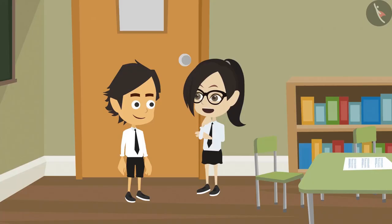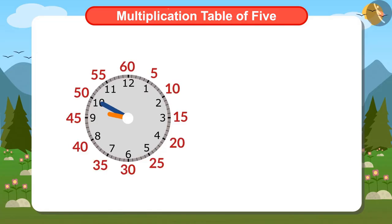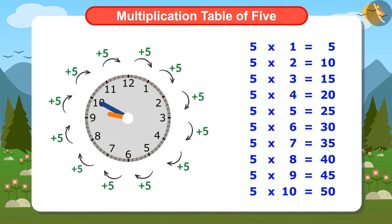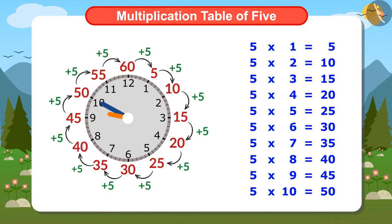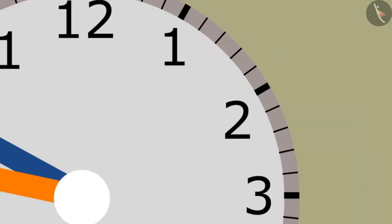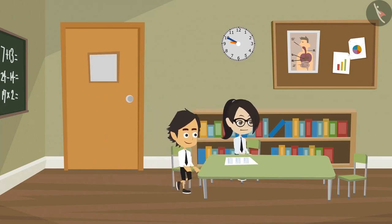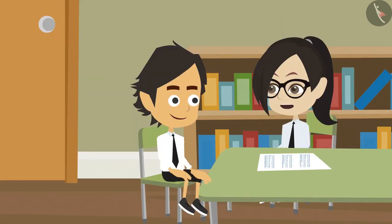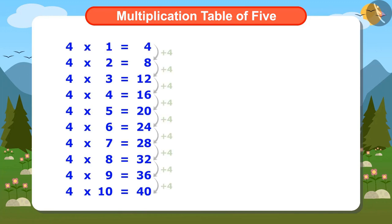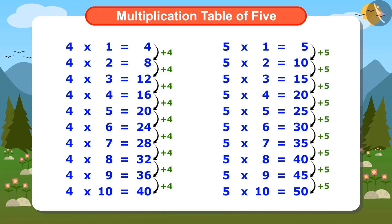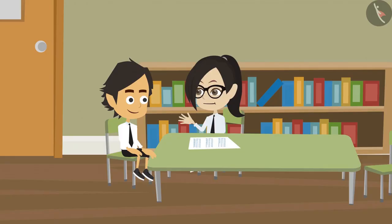I also know the multiplication table of 5, but I never thought that it can be used to find the minutes. Now you can also use the multiplication table of 5 to read the minutes — you do not have to count the minutes one by one. But how did you write the multiplication table of 5? The multiplication table of 4 is written by adding 4 repeatedly. In the same way, the multiplication table of 5 is written by adding 5 repeatedly.